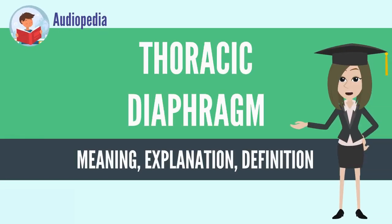The thoracic diaphragm, or simply the diaphragm, is a sheet of internal skeletal muscle in humans and other mammals that extends across the bottom of the thoracic cavity. The diaphragm separates the thoracic cavity, containing the heart and lungs, from the abdominal cavity and performs an important function in respiration. As the diaphragm contracts, the volume of the thoracic cavity increases and air is drawn into the lungs.